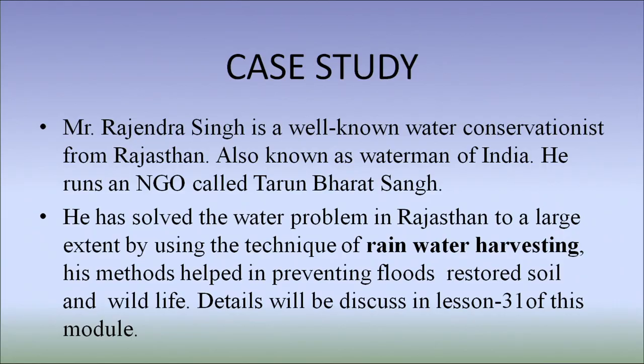Mr. Rajinder Singh is a well-known water conservationist from Rajasthan, also known as the Water Man of India. He runs an NGO called Tarun Bharat Sangh. He has solved the water problem in Rajasthan to a large extent by using the technique of rainwater harvesting. His methods help in preventing floods, restored soil and brought back wildlife. Details will be discussed in lesson 31 of this module.